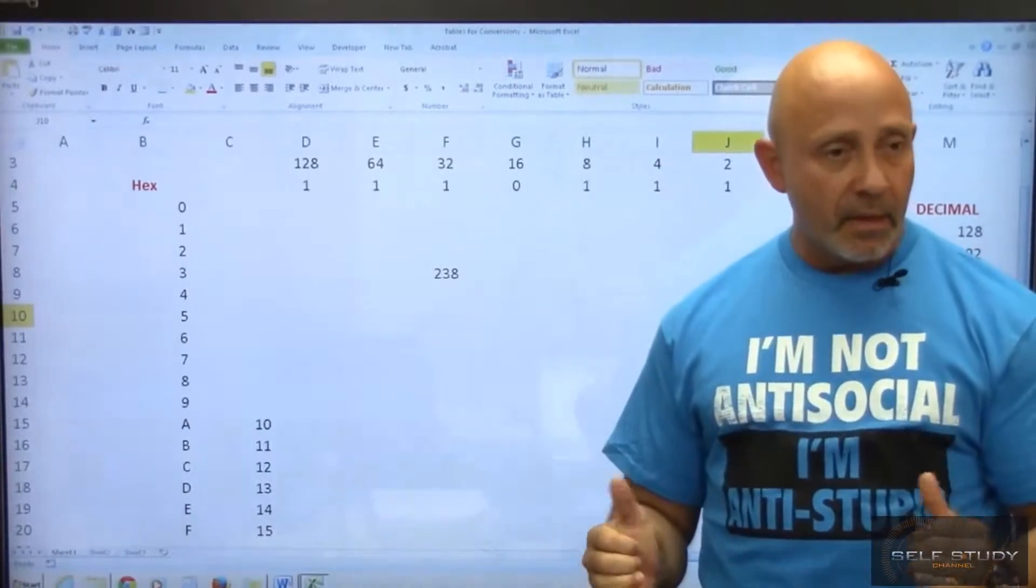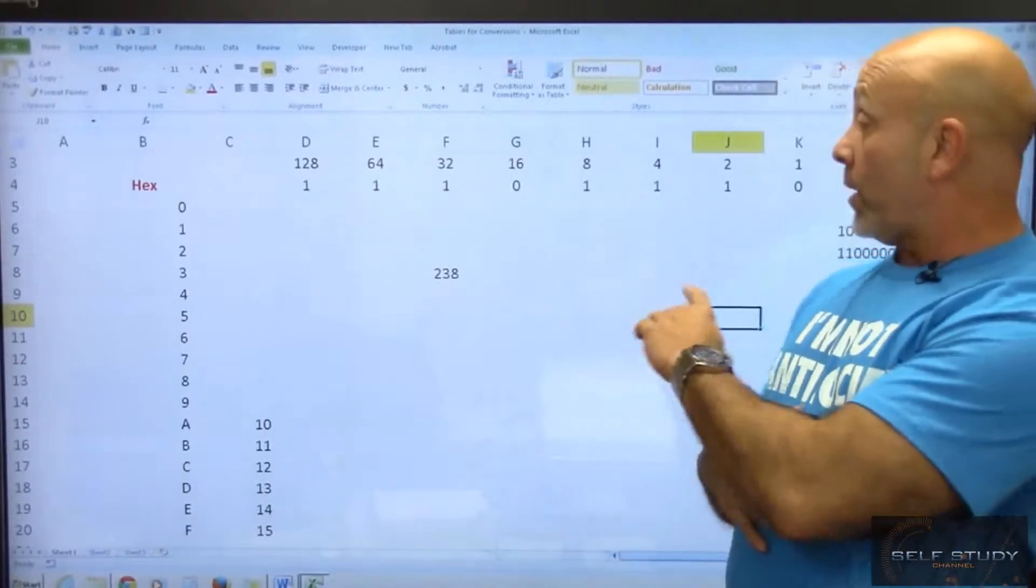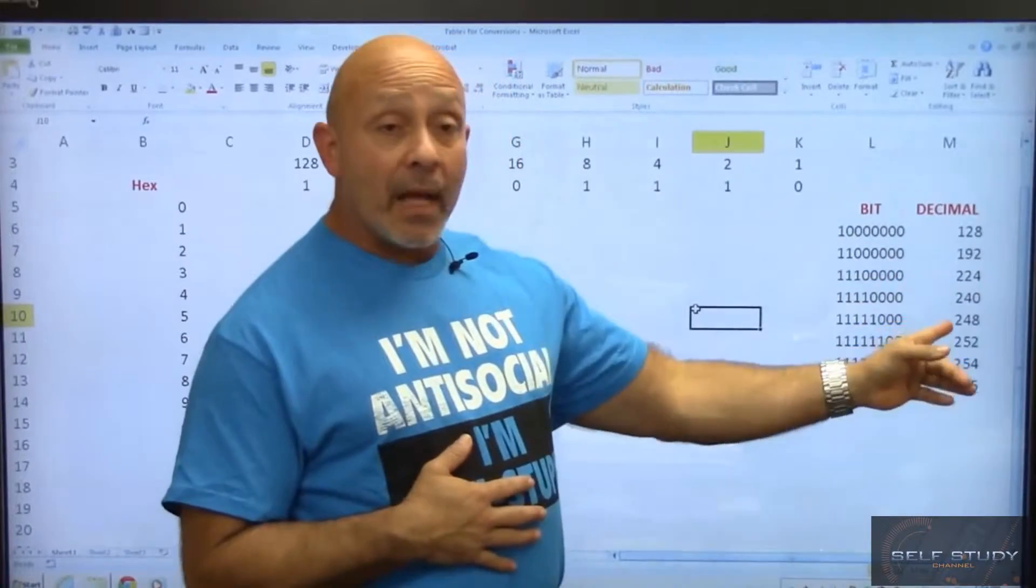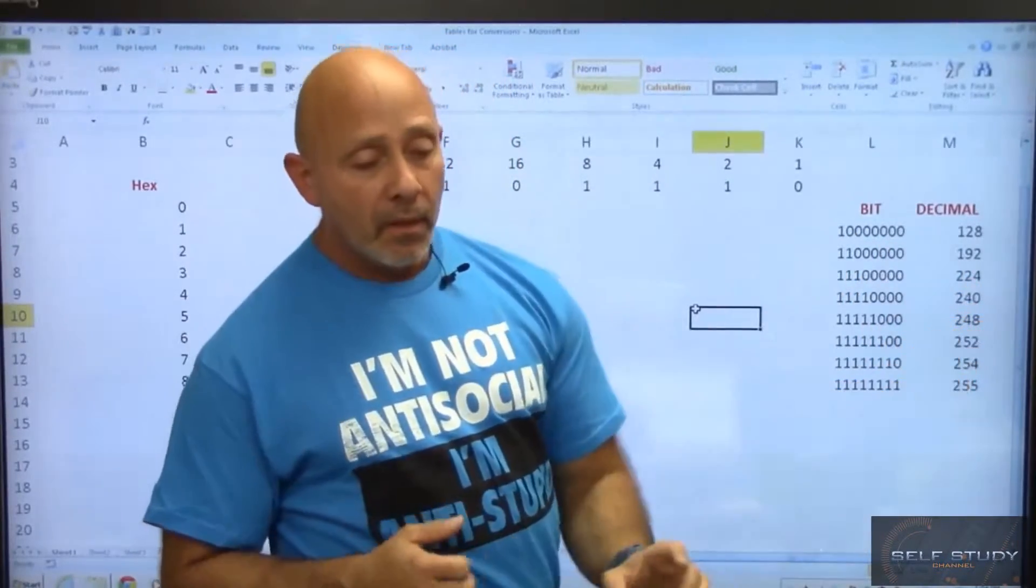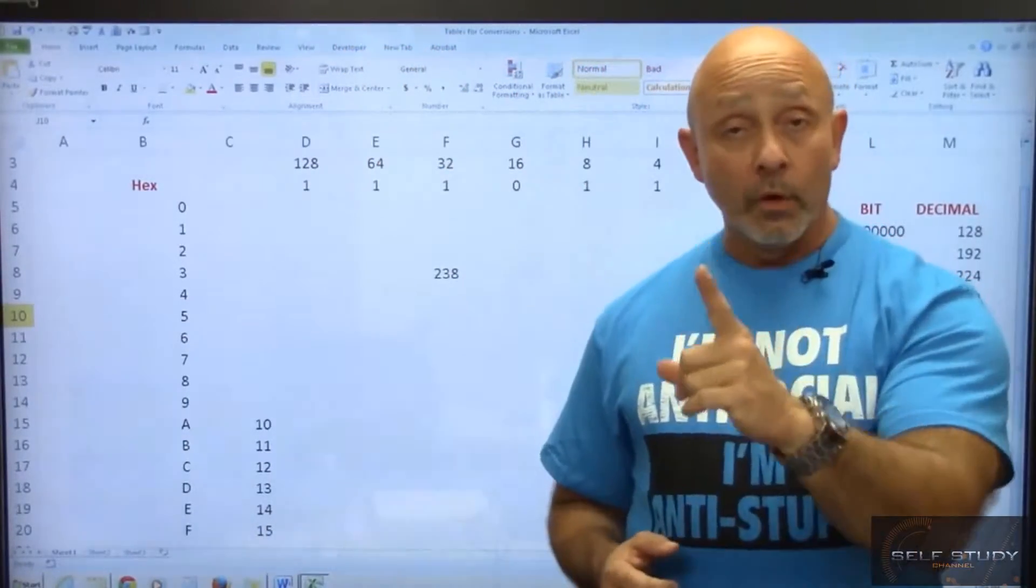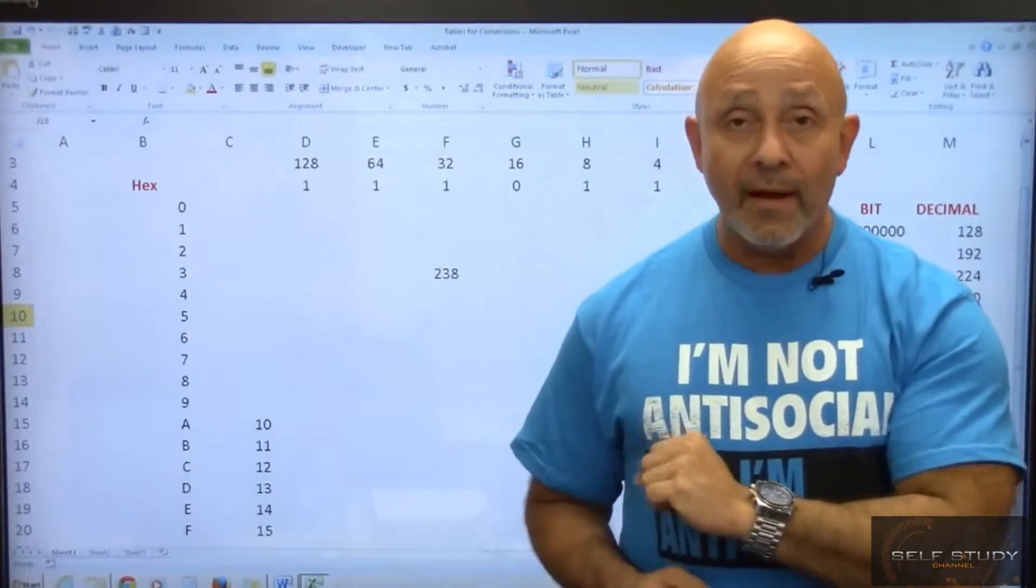Remember, everything goes to binary. So we took the 238, using our table to help us out, to get us close to that number without going over, and we find out the binary.